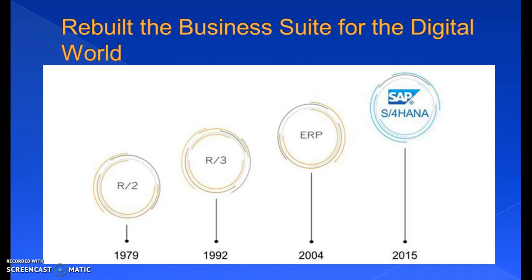Additionally, a new switch framework was introduced to allow customers to enable only the new functions developed by SAP selectively, in order to avoid disrupting their core processes. The SAP R3 name was replaced by SAP ERP, which became part of the larger family known as SAP Business Suite. This suite also contained many other line-of-business applications including CRM, SEM, APO, and SRM.